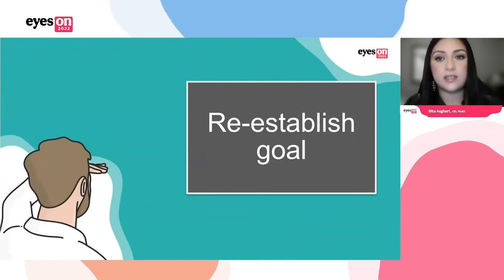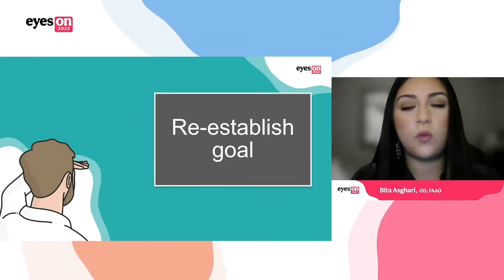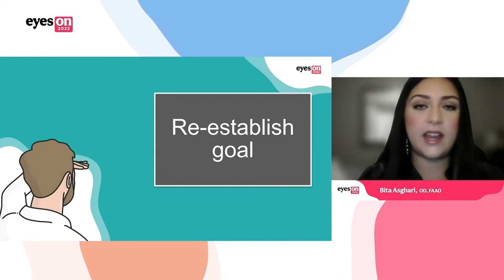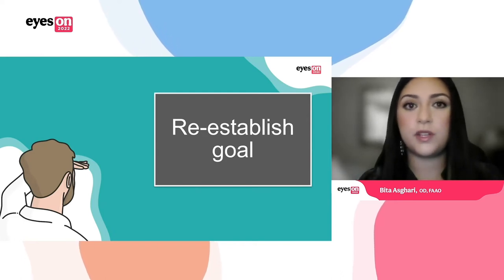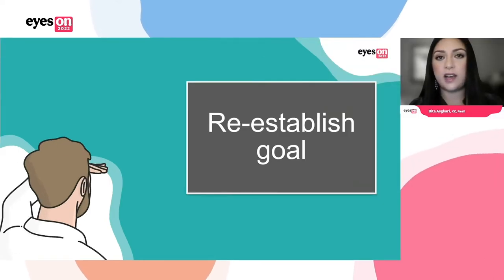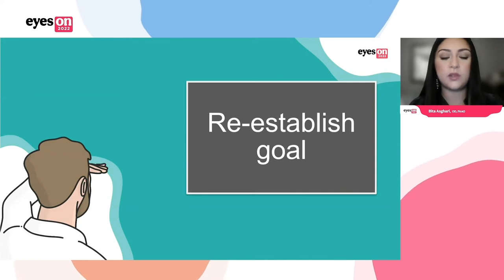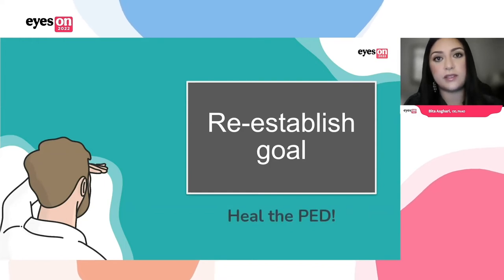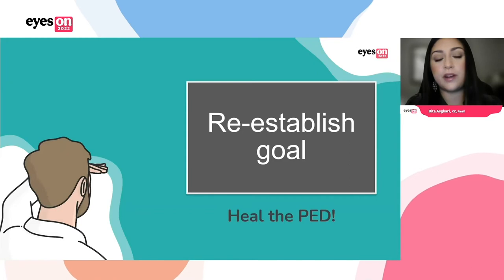She was motivated but had not been successful with scleral lenses before because she couldn't get them in and out. So what else could we do? What is our goal here? As I said, failure is when you're not able to meet your goal. If my goal is that she's going to have independent application and removal, that might be a hard goal to set. So what we all discussed together, along with our corneal specialist, was to set the goal to heal the persistent epithelial defect — that is the fire we're trying to put out.